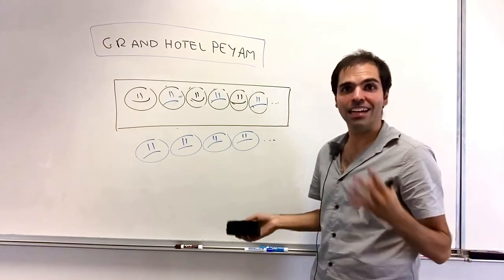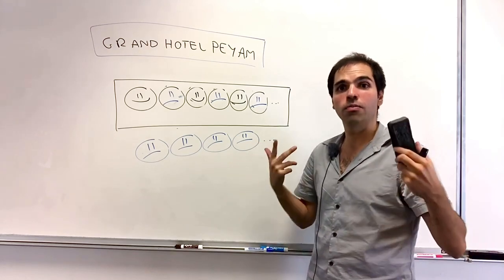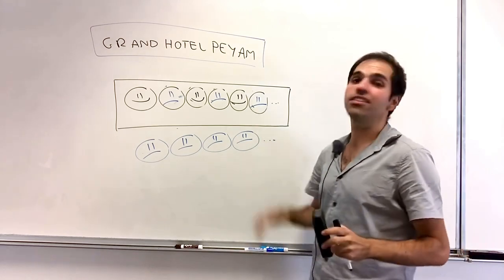And again, mathematically, what this shows is that the union of two countably infinite sets is still countably infinite.